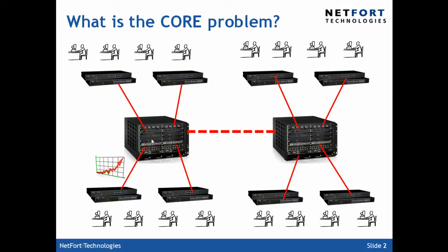To gain visibility into a network like this, we need to download and install the Languardian software, plug a normal network port into each of the core switches back to the Languardian system, and we can take a look at what's happening — figure out what ports are busy, what are not so busy, and with the busy ports drill down and see what's happening. So let's take a look at that now.